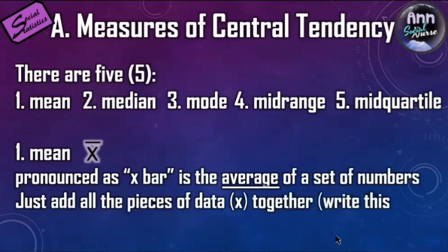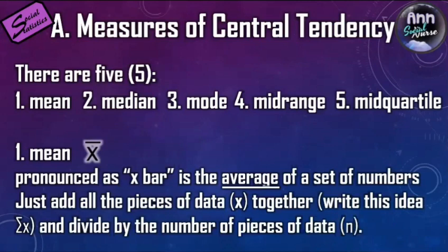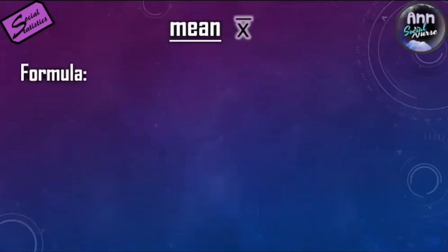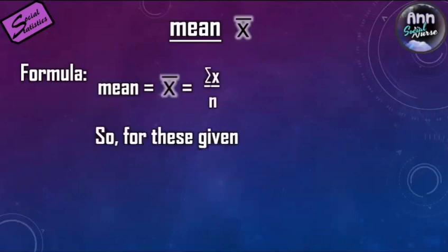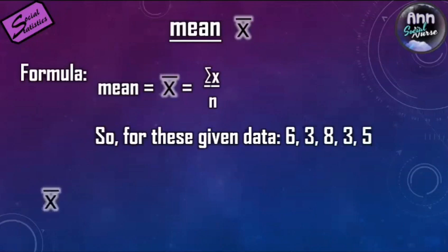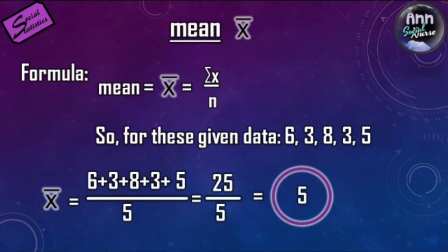The mean, or x-bar, is the average of a set of numbers. Just add all the pieces of data together and divide by the number of pieces of data, n. Each data point is x, so if there are five of them — x1, x2, x3, x4, x5 — you sum all of them (summation of x) and divide by n. That's the formula. For the given data 6, 3, 8, 3, 5, the total is 25, divided by 5. The mean is 5. For your clan survey with 50 or 60 cases, you'll need a calculator, and for hundreds of cases in real research, you would use Excel or SPSS.